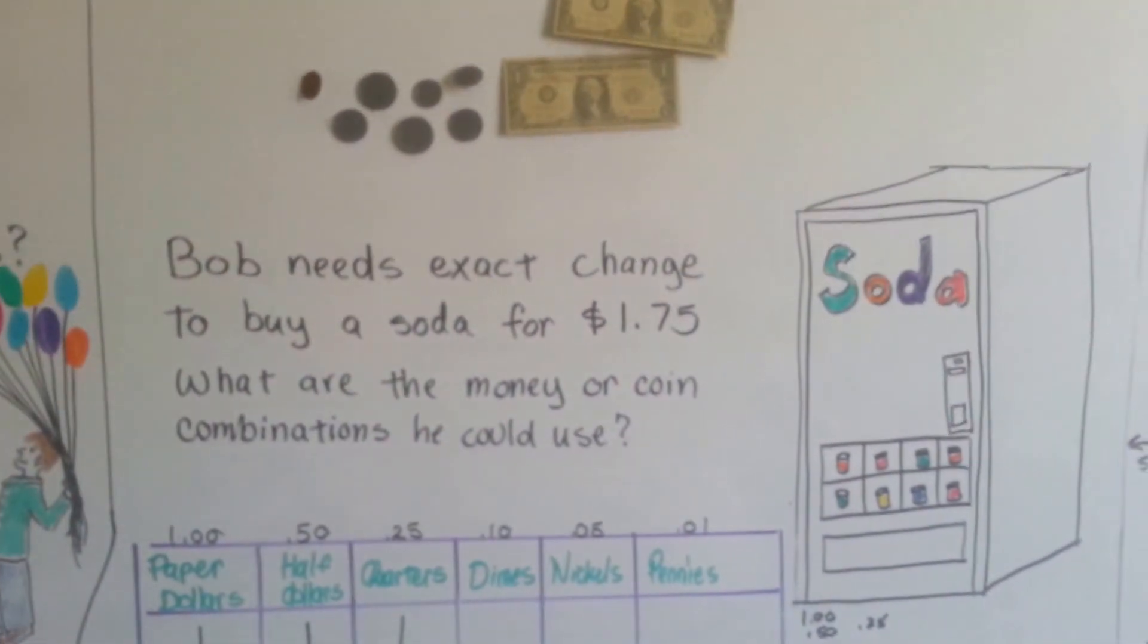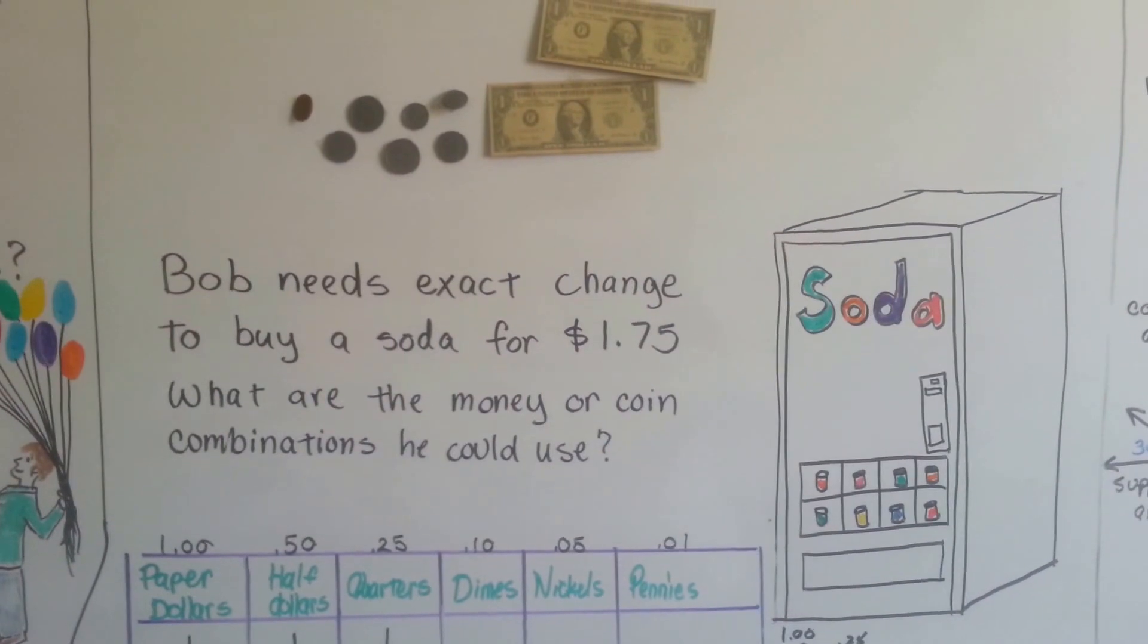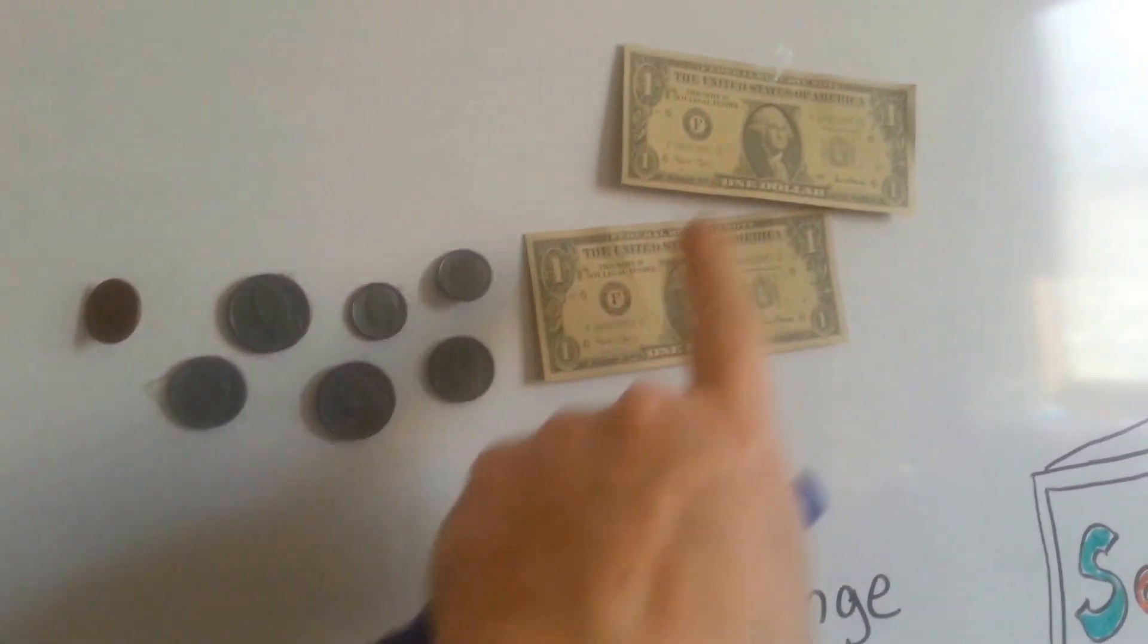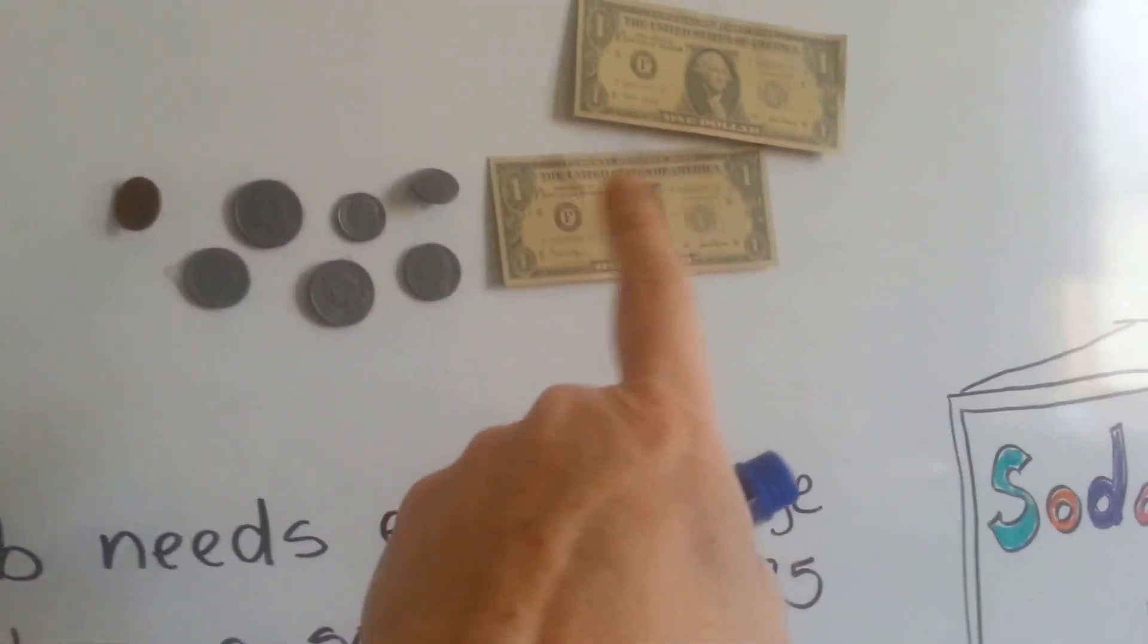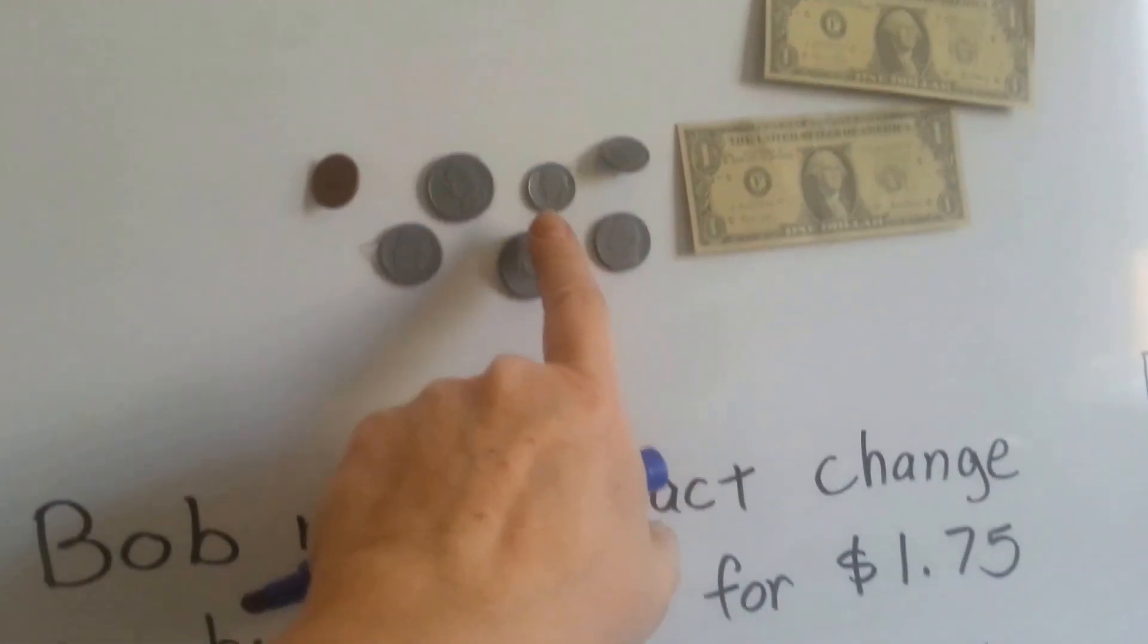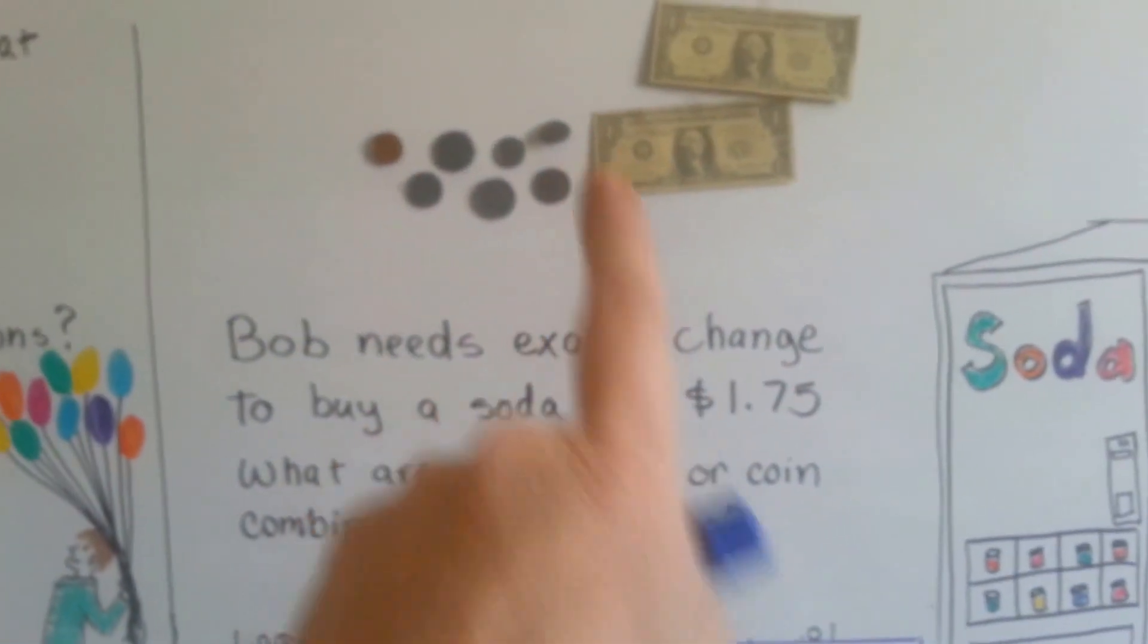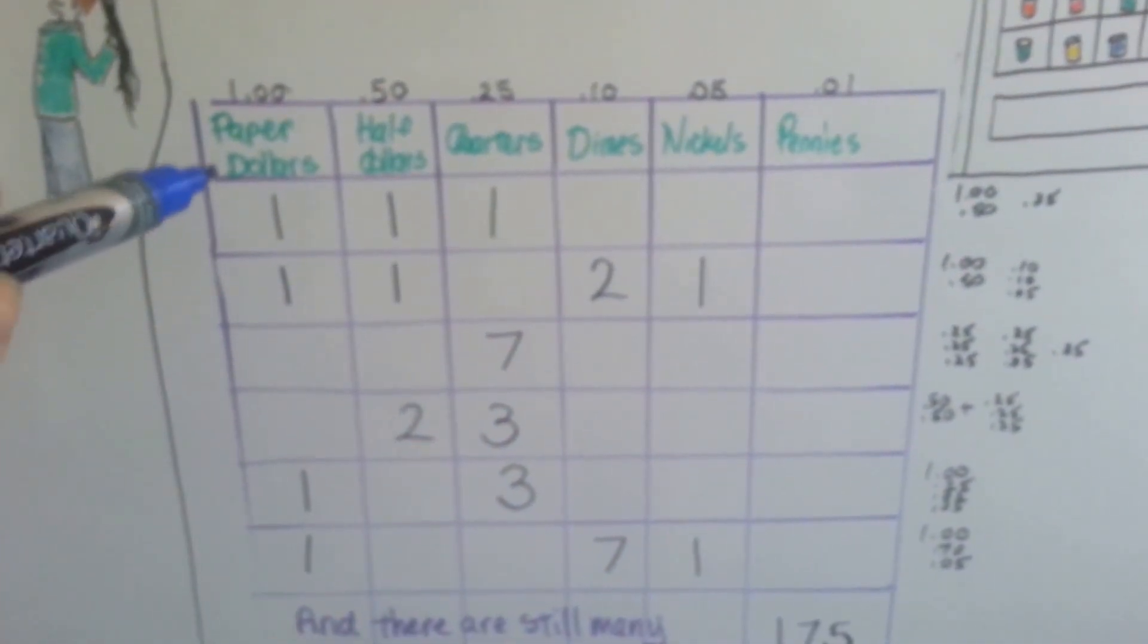Bob needs exact change to buy soda from a machine. It costs $1.75. So what are the money coin combinations he could use? Here he's got a dollar and a dollar, but it says he needs exact change. So maybe it won't take both dollars, it might take one. And he's got a dime here and a dime here and a nickel and a quarter and a quarter and a penny and another nickel. This is what he's got. What combinations could he use?